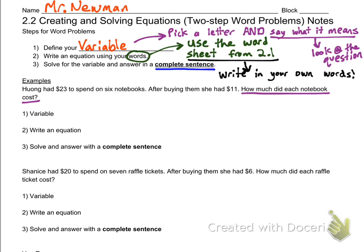First of all, we want to find the variable. I underlined the question because it said how much did each notebook cost? Let's read it. Huang had $23 to spend on six notebooks. After buying them she had $11. How much did each notebook cost? Each notebook cost is the variable because that's what we're looking for, so I just made N be the cost of a notebook.